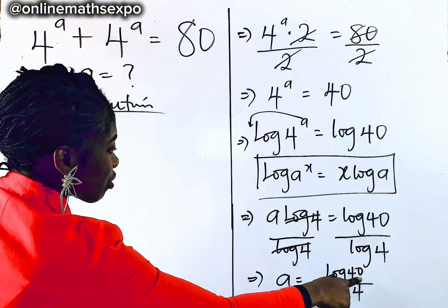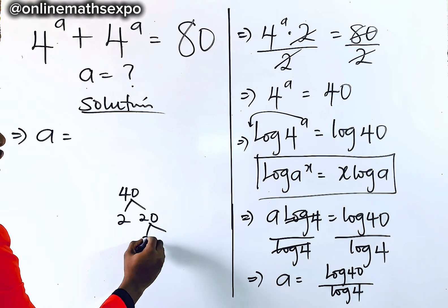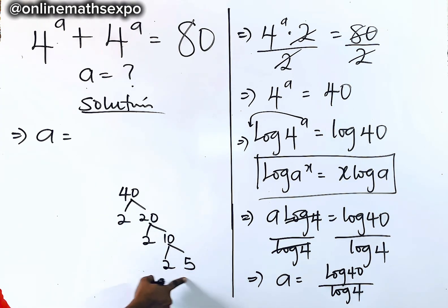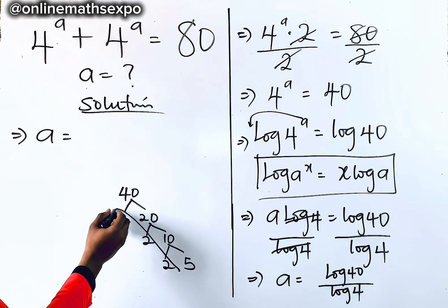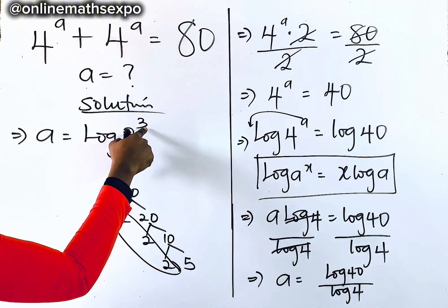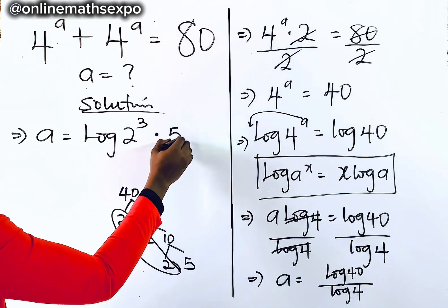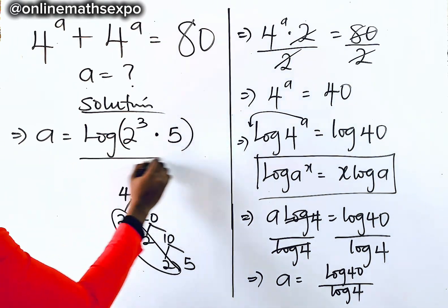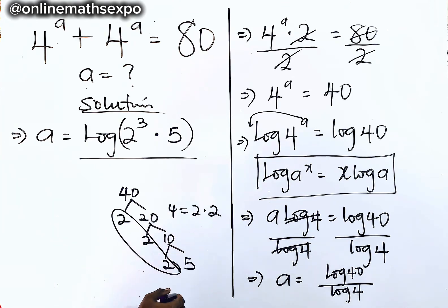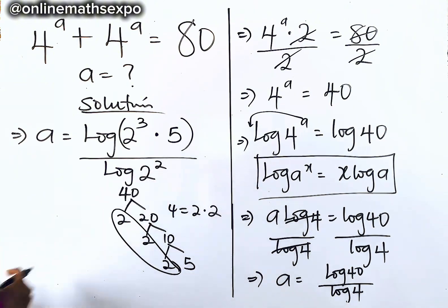Now we know that 40 is the same as 2 times 20; 20 is 2 times 10; 10 is 2 times 5. So 40 equals 2 cubed times 5. And since 2 appears 3 times, we write log of 2 to the power of 3 multiplied by 5. For 4, since 4 is 2 times 2, that gives us log of 2 to the power of 2.